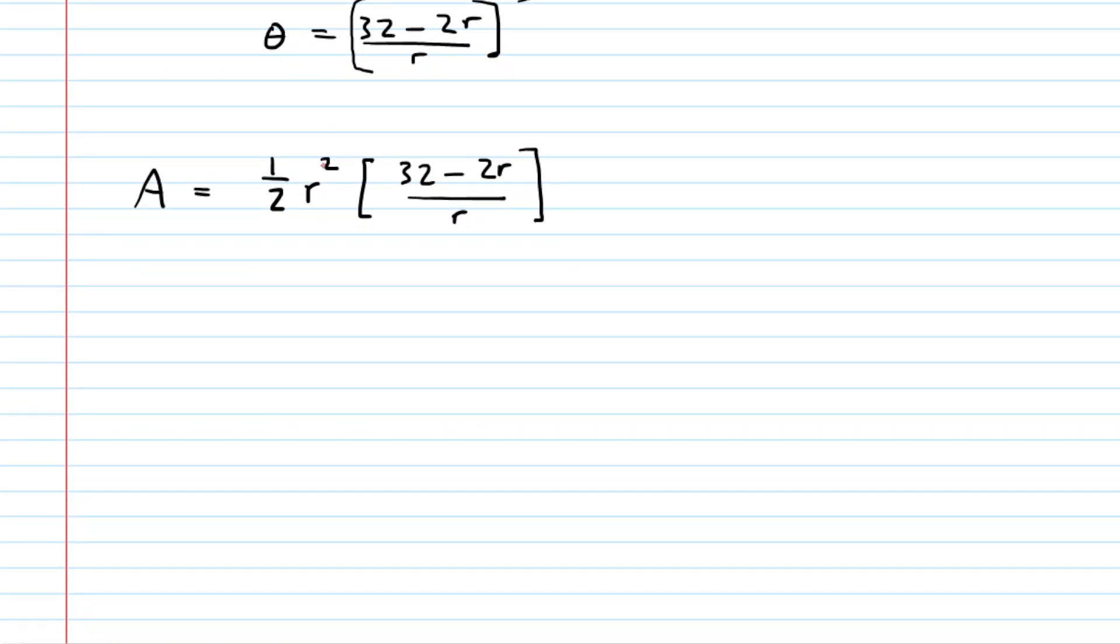Now we can simplify this. Right here we have r squared divided by r. And so r squared divided by r is just r. In other words, we can cancel a factor of r, leaving us with just one-half r. And then we're going to distribute that one-half r into the brackets.